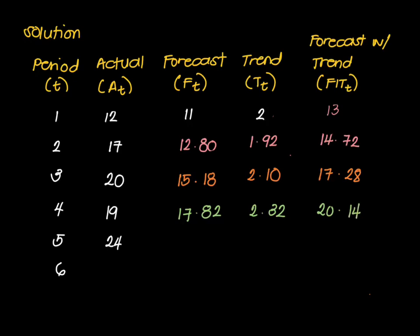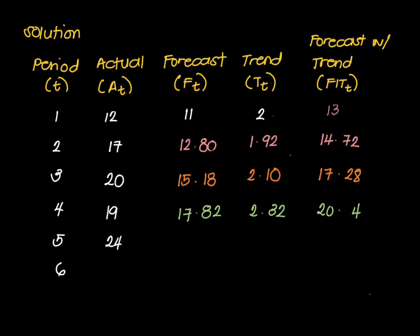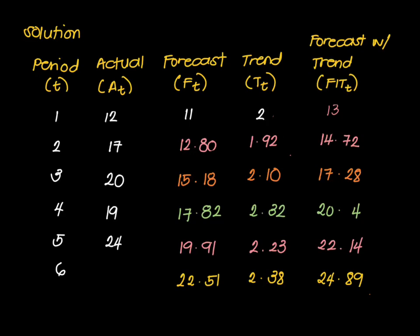We are just going to continue this process up to the 6th period. Take note that the FIT for period 6 is what's missing — many make the mistake of stopping once they find the forecast F, but you must also compute the forecast including trend for the period in question. Continuing the technique gives a final answer of 24.89 for period 6. That concludes exponential smoothing with trend adjustment.